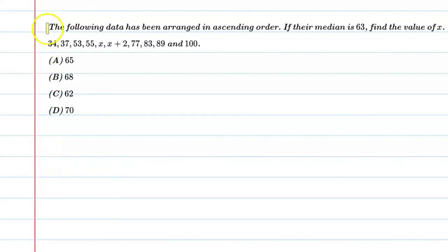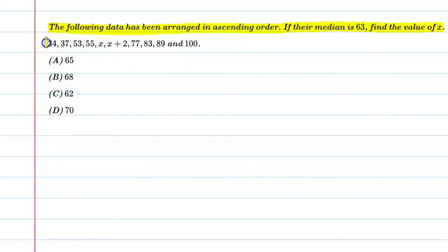Hello students, let's solve this question. The following data has been arranged in ascending order. If their median is 63, find the value of x. The data is: 34, 37, 53, 55, x, x plus 2, 77, 83, 89 and 100.